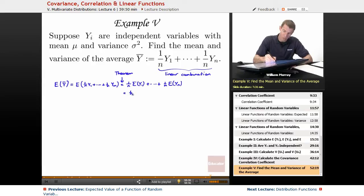And so that's 1 over n times E of y, up to 1 over n times E of y. And so if you add up n copies of 1 over n times E of y, you just get a single copy of E of y. There, so that's my expected value of the average.